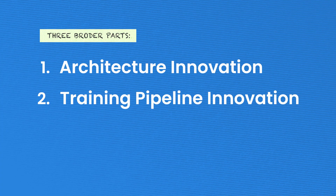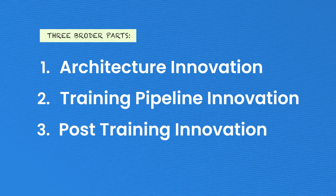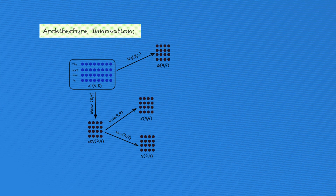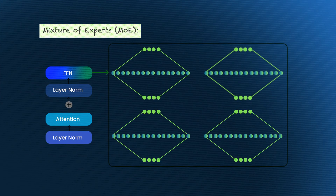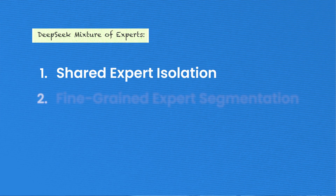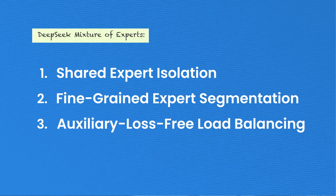In this book, we have divided the DeepSeek innovations into three broader parts. First is architectural innovation, which consists of multi-head latent attention — which saves a lot of memory costs — and second, mixture of experts. This is not the standard mixture of experts seen in models like LLaMA or Mistral; it's specifically a DeepSeek mixture of experts with three key innovations: shared experts, fine-grained segmentation, and auxiliary load-free balancing.